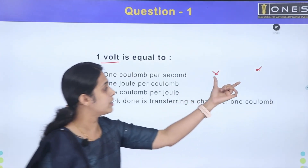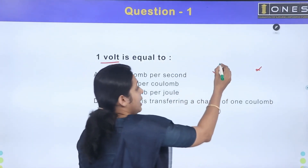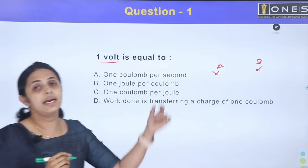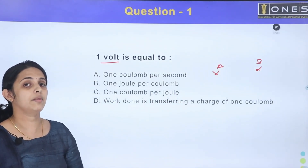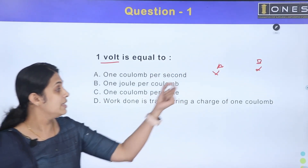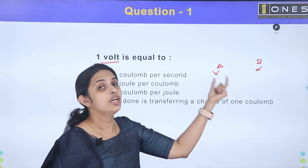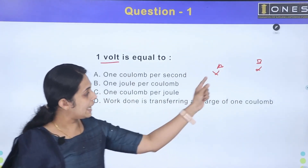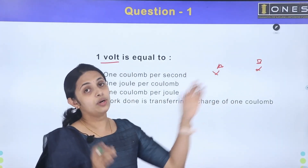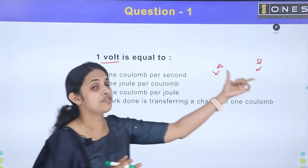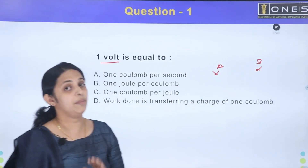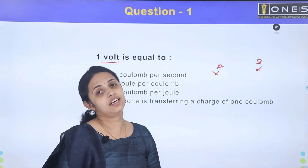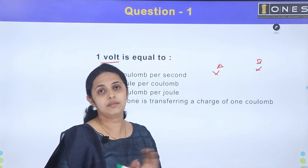We calculate the electric potential and we have a potential difference. We mark these two points A and B. The potential difference is the work done in transferring a unit charge from A to B.